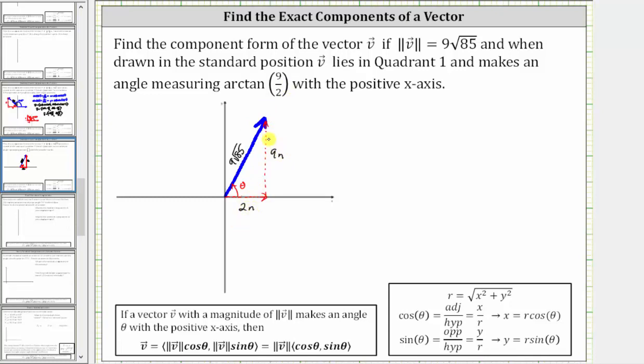If we try to use 2 and 9, 2² + 9² does not equal 9√85, and that would be incorrect. Now if we can find 2n and 9n, we can determine the x and y components of the given vector.